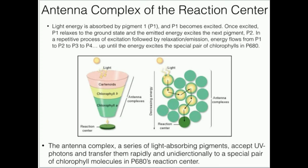Now why is this important? It turns out that light does not directly strike what we call the reaction center. Earlier in this video we talked about the reaction center of the photosystems. In photosystem 2 that's called reaction center P680 and in photosystem 1 it's P700. The light does not necessarily directly strike P680.